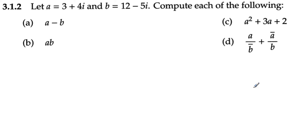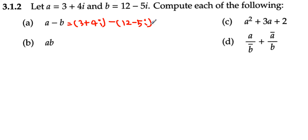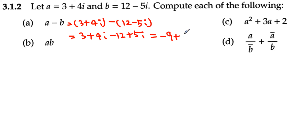Let's look at the second question. a is 3 plus 4i, b is 12 minus 5i, and they're asking for each of the following. For the first part, we simply plug in: 3 plus 4i minus (12 minus 5i). The negative sign distributes, giving us 3 plus 4i minus 12 plus 5i. Then 3 minus 12 becomes negative 9, and 4i plus 5i becomes positive 9i, so the final answer is negative 9 plus 9i.